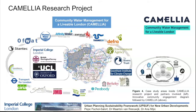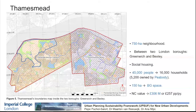Camellia has four case studies, and one of them is Thamesmith. Thamesmith is in South East London and is a 750-hectare neighbourhood between two boroughs, Greenwich and Bexley, where most of the houses are social housing. Nowadays, around 45,000 people live there in around 16,000 households. However, Peabody, the housing association that owns most of the land, intends to double this number. An important feature is that it has 150 hectares of blue and green space, translated into a large natural capital value of around 306 million pounds, or 457 pounds per person per year.